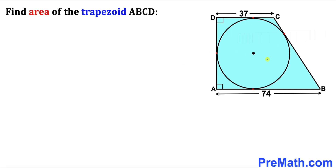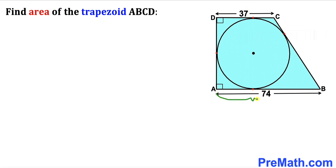Welcome to Pre-Math. In this video we have a circle that is fully inscribed in a trapezoid ABCD, as you can see in this diagram, with points of tangency marked. The length of base CD is 37 units, whereas the length of base AB is 74 units. We are going to calculate the area of this blue shaded trapezoid ABCD.